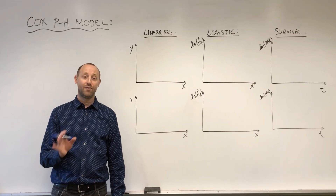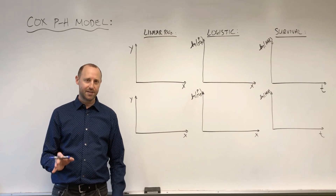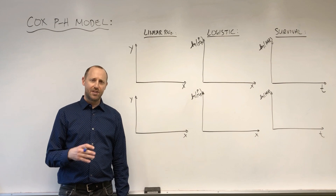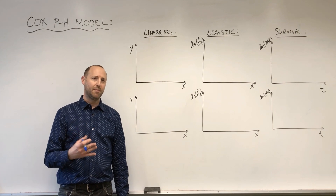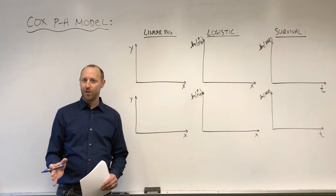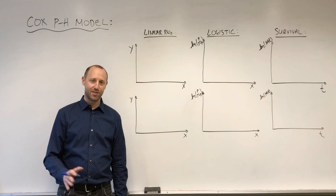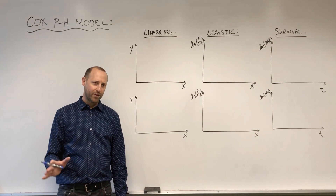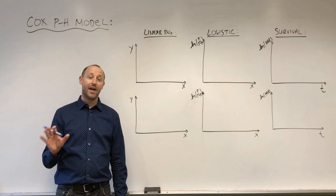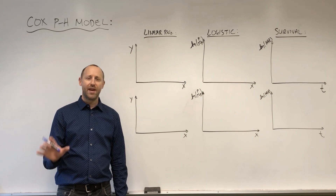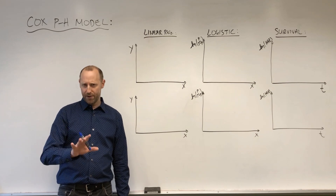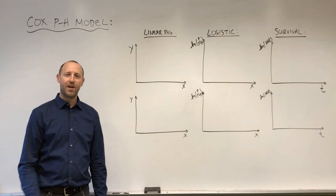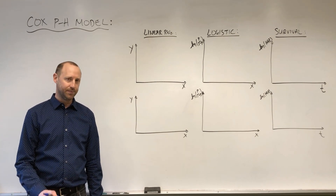We've talked a lot about survival analysis and the important ideas surrounding that, and we started to build up how regression models can be used to estimate the survival function. We did a big picture overview, then looked at the exponential model as the entry-level model to give us the foundation. Now we're leading our way into the Cox proportional hazards model.